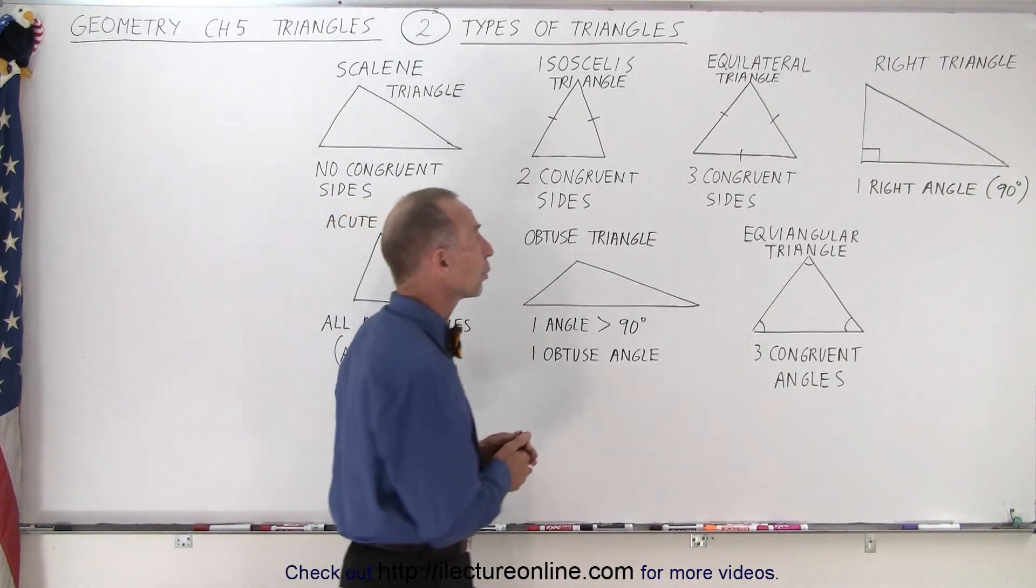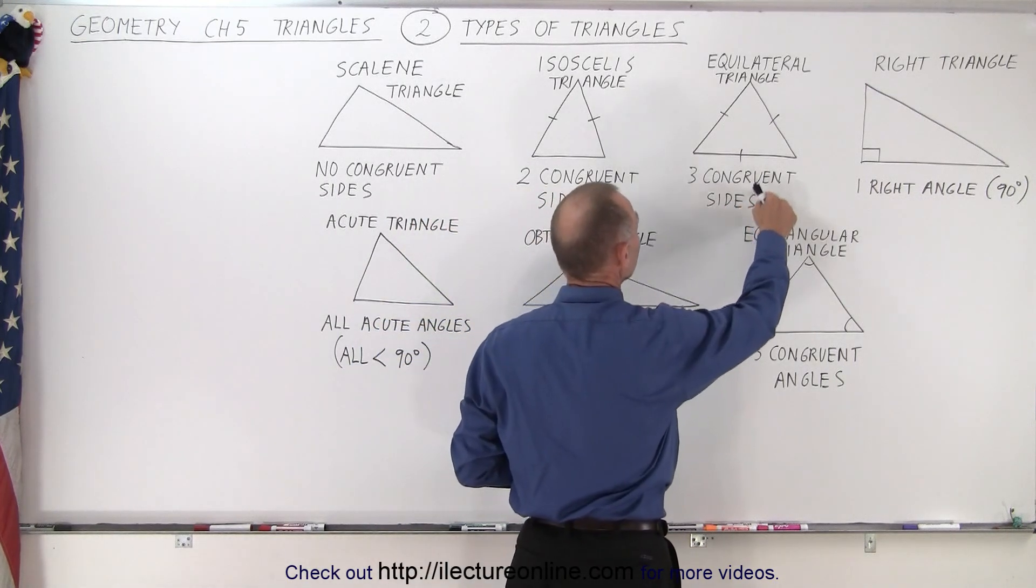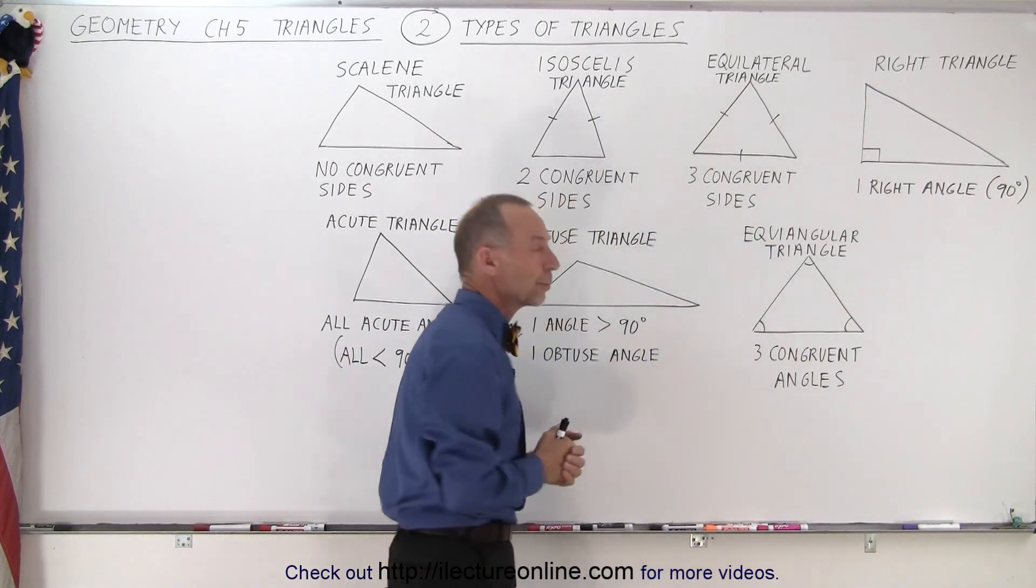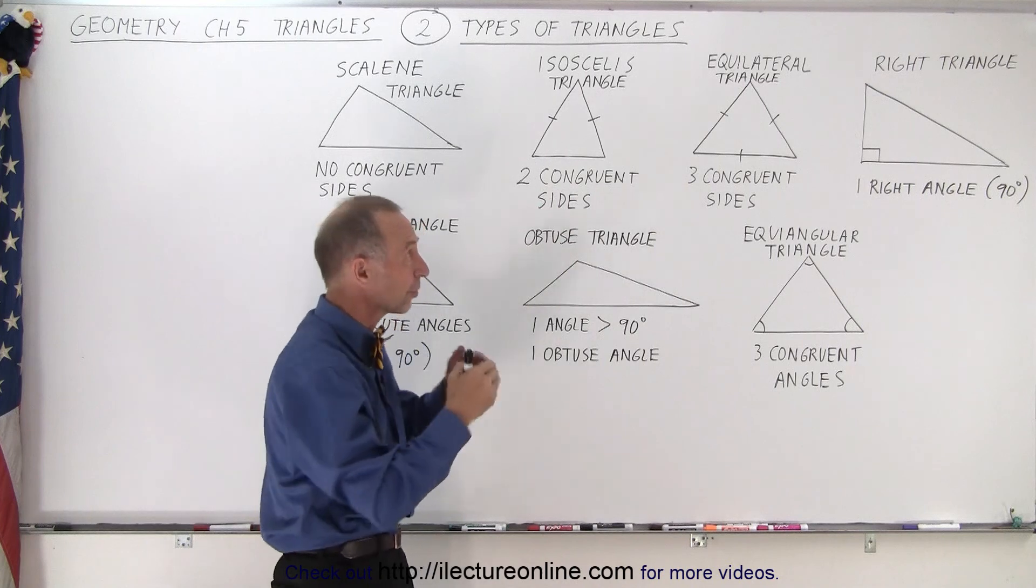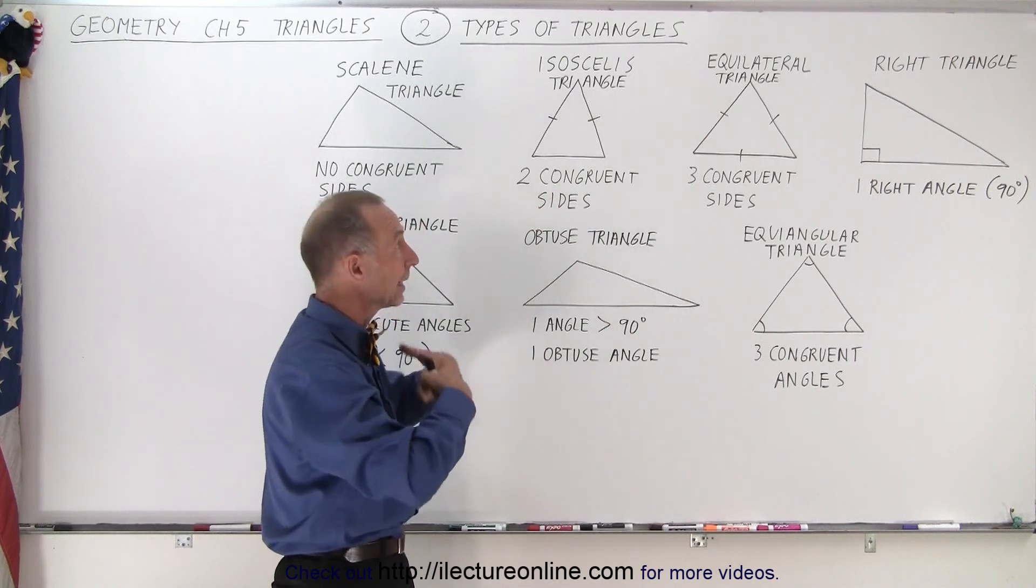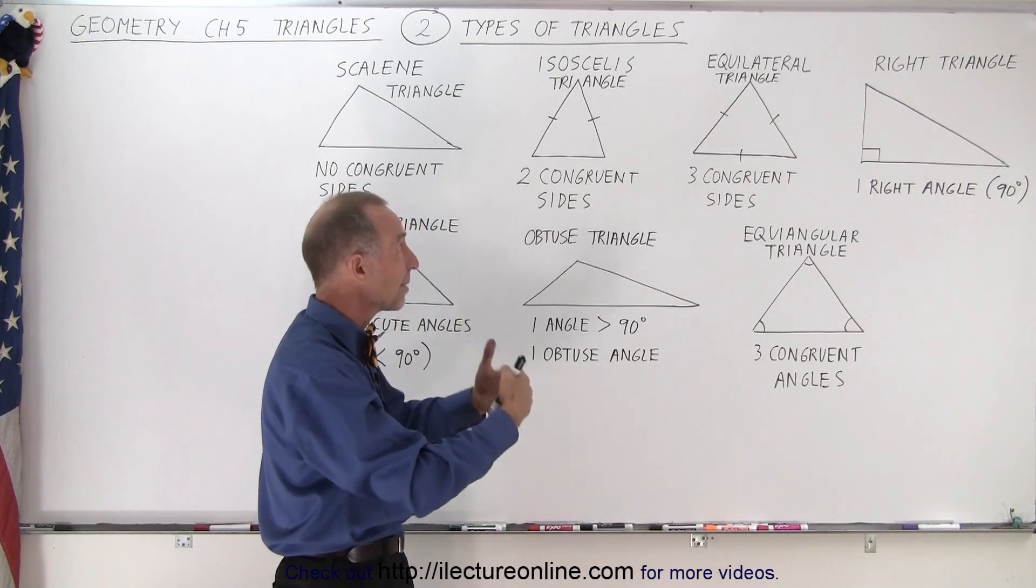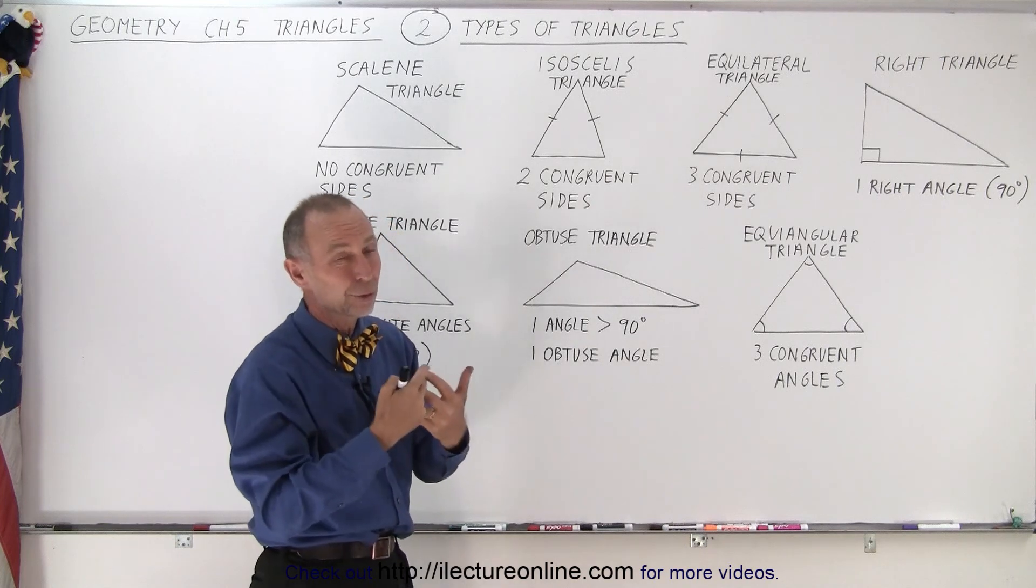We can have a triangle where all three sides are congruent and that's called an equilateral triangle. The name makes a lot of sense because lateral means side and equi means the same, so the same sides or congruent sides.